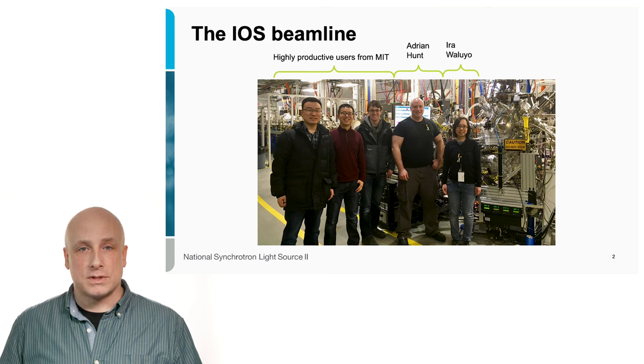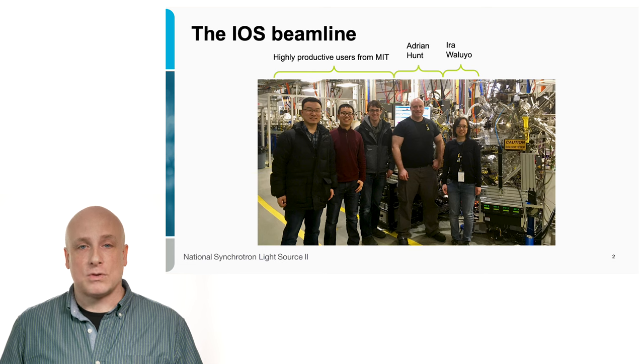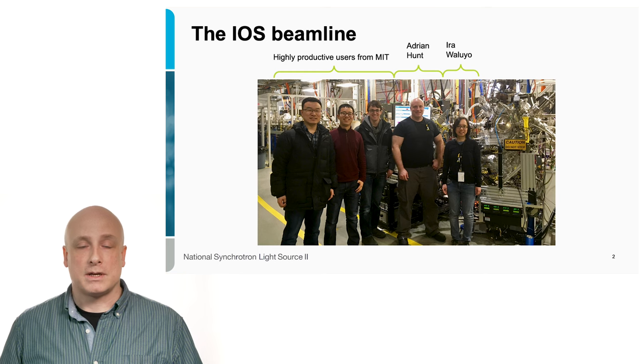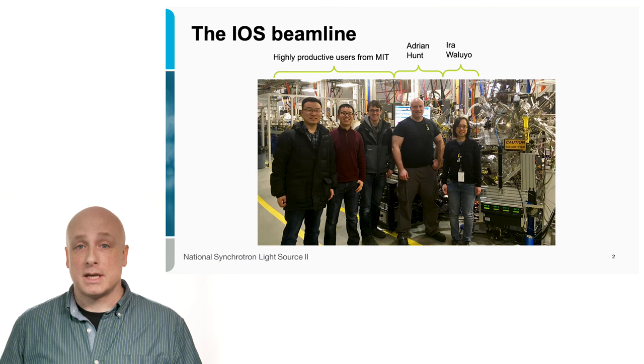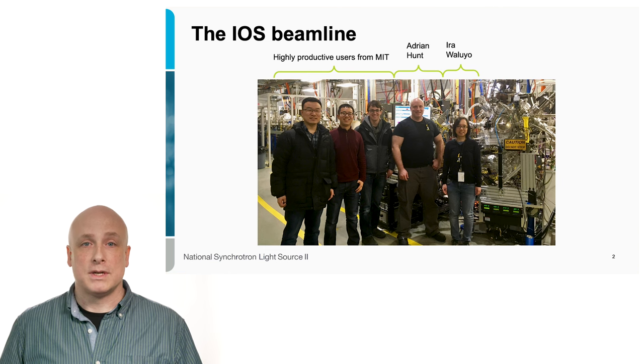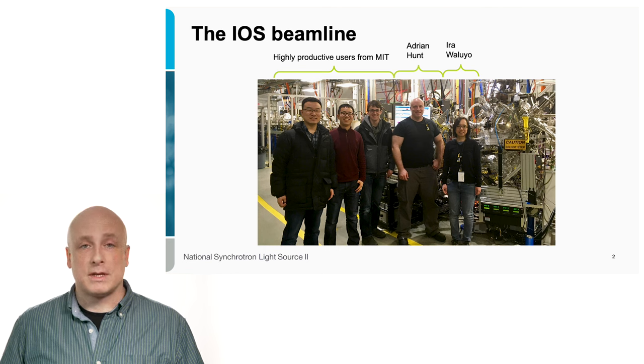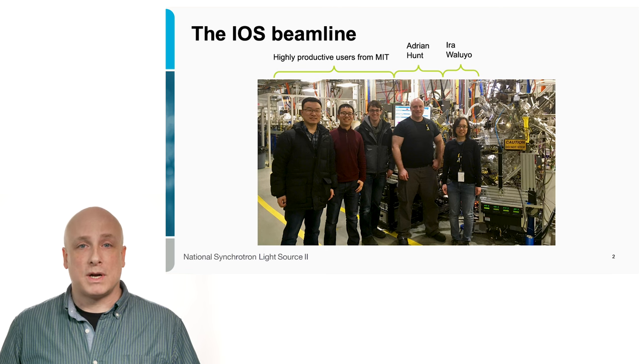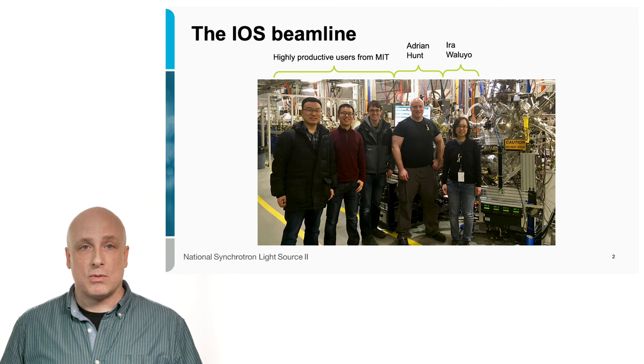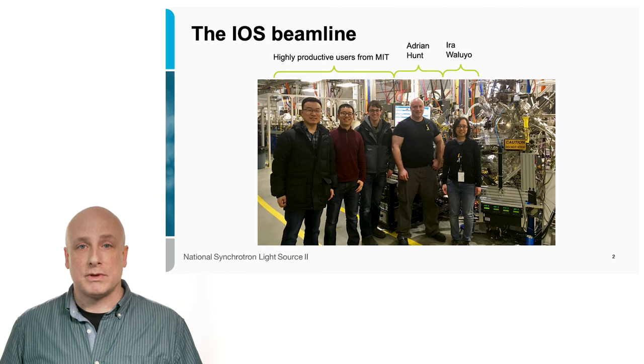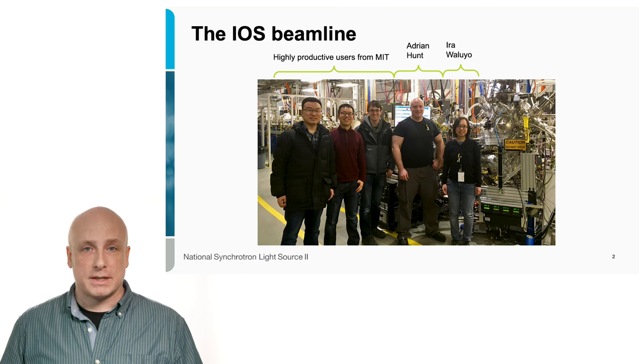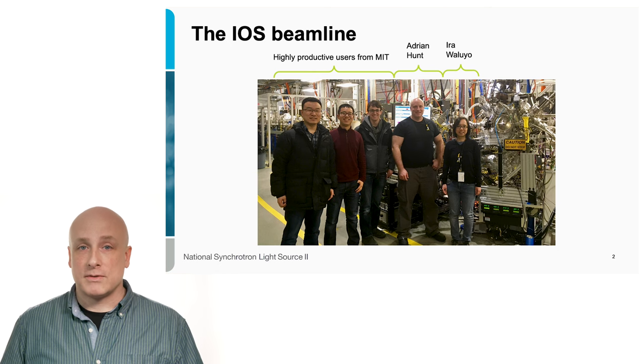So the National Synchrotron Light Source 2 is a user facility, so academic researchers can apply for time in a competitive process and get time to come and use our equipment for free. Industrial users can also come and use the beamline if they do not want to publish their research in open access peer-reviewed journals. Then they can pay to use it for proprietary time and keep everything secret.